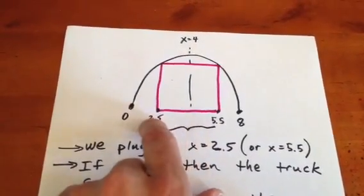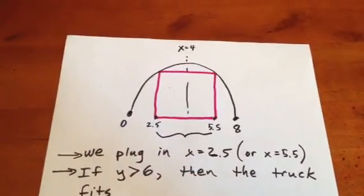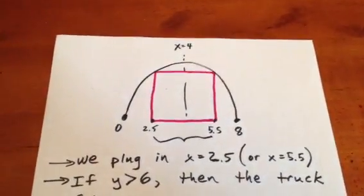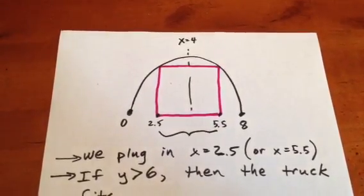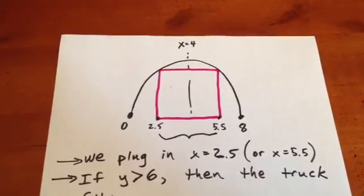So what we can then do is sub in an x value of 2.5 and find out what the y value of the parabola is. We hope, for the sake of the truck driver, that the y value of the parabola is at least 6. If it's less than 6, we're in trouble because the truck will hit the parabola.